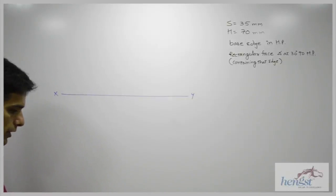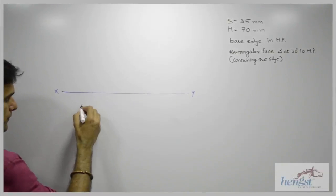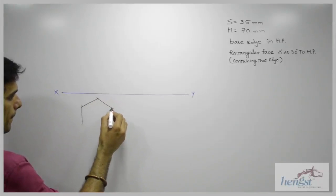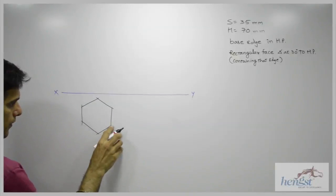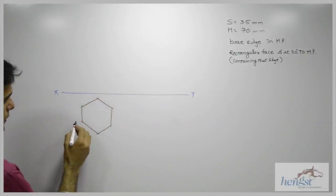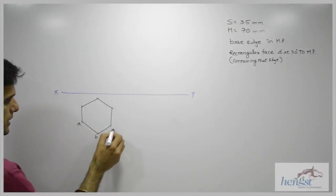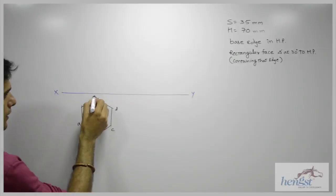So when we draw a hexagon, we will draw it like this. I can label this as a, b, c, d, e, f.